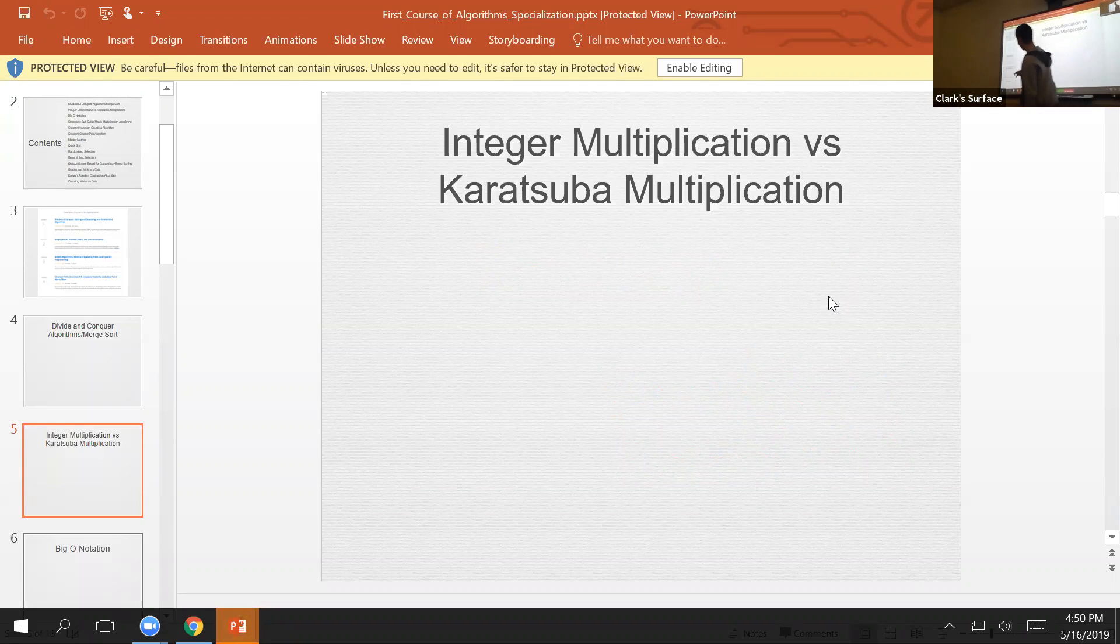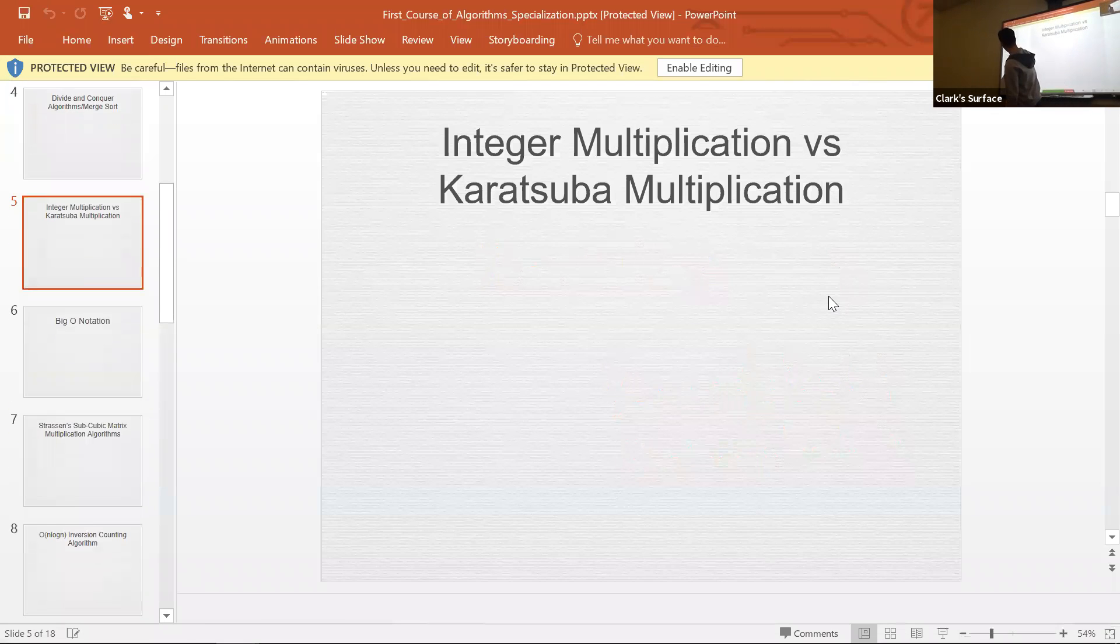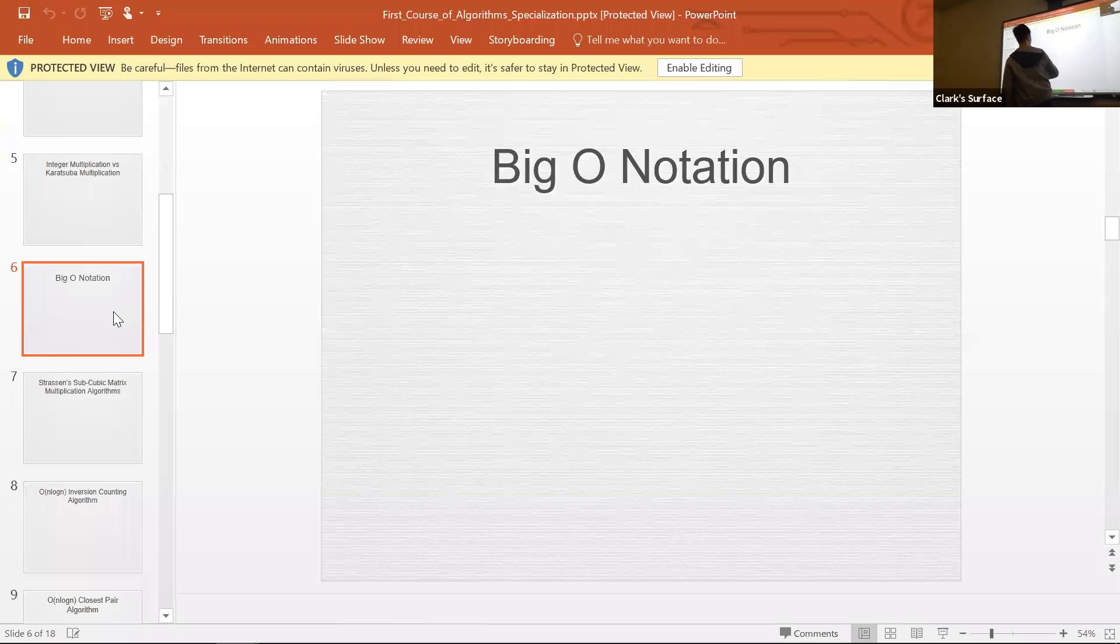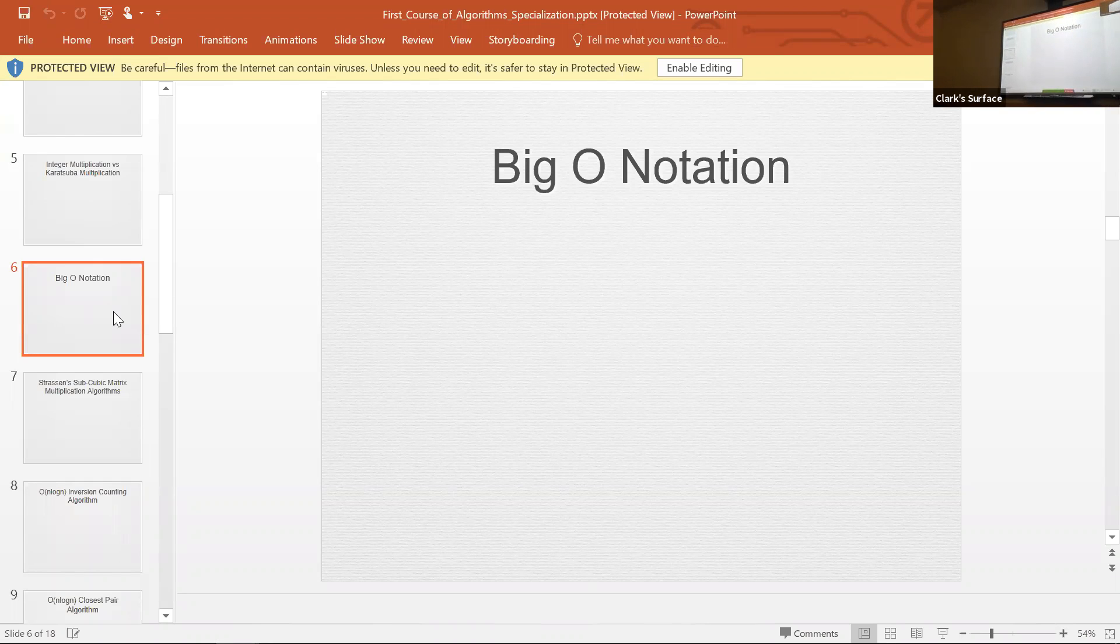There's actually a lower bound of a divide and conquer algorithm for comparison-based sorting algorithms, but I'm not going to talk about it. Why not? Because I haven't talked about Big O notation yet.